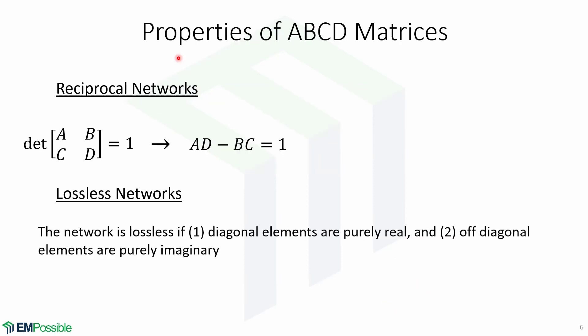The reciprocal and lossless properties of other matrices also apply to transmission matrices. A transmission matrix is reciprocal if its determinant is equal to 1. An ABCD network is lossless if two things occur: the first one is that its diagonal elements are purely real and the second one is that its off-diagonal elements are purely imaginary.